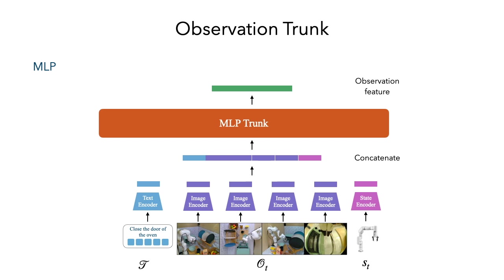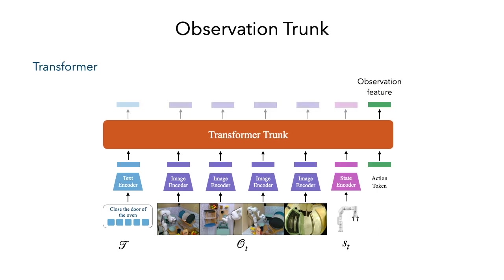For the observation trunk, we experiment with two variants. An MLP trunk where all the input embeddings are concatenated and passed through a multi-layer perceptron to provide an observation feature. A transformer trunk treats each embedded modality as a token and predicts the observation feature corresponding to a separate action token.